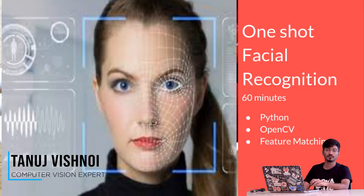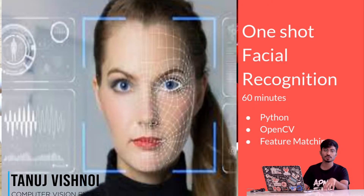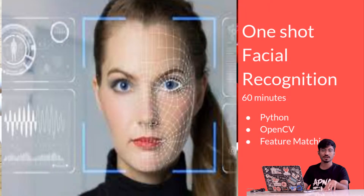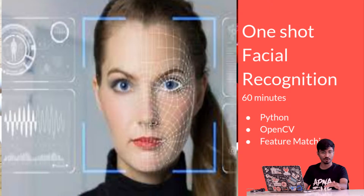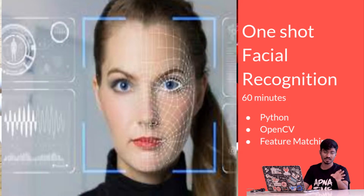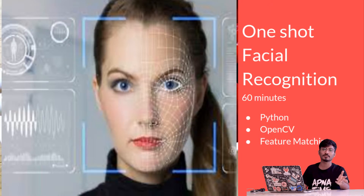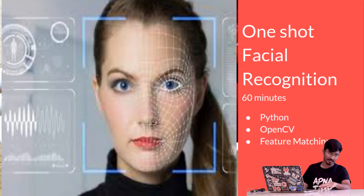Hello everyone, today we will be talking about a very famous algorithm called ORB, which is a one-shot facial recognition algorithm. It is currently being used in mobile phones and apps like Google Photos, where images are grouped according to people. The use of this algorithm is that it does not require major computations and does not require a GPU — it can compute on a normal CPU.